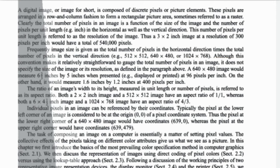Although this convention makes it relatively straightforward to gauge the total number of pixels in an image, it doesn't specify the size of the image or its resolution. As defined in the paragraph above, a 640 by 480 image would measure 6.67 by 5 inches when presented at 96 pixels per inch.